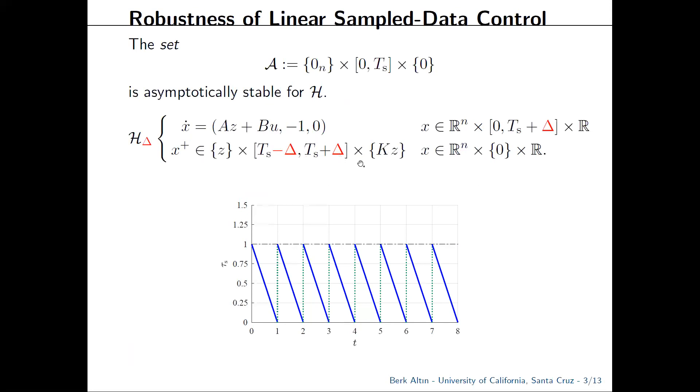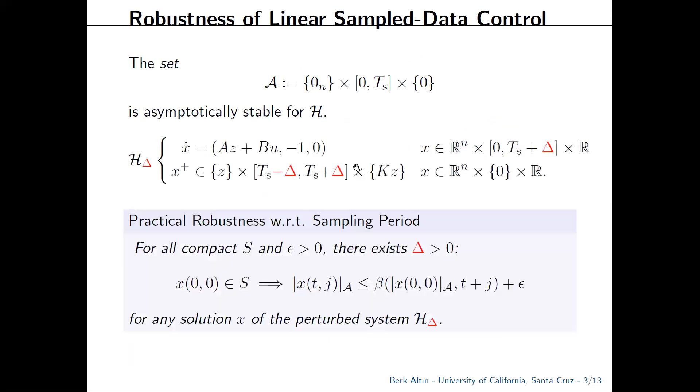As an example, let's suppose that our sampling timer Ts is normally equal to 1, and if we pick our parameter delta to be 0.25, the timer might evolve like this so that the time between consecutive samples is no longer constant. With this formulation, existing robustness results allow us to say that given any initial condition and any acceptable error level epsilon, there's a delta that we can tolerate in the sense that the solutions of H_delta will converge to an epsilon neighborhood of our set A.